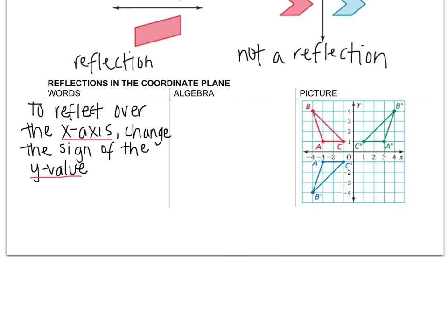So for example, if we start with this original, and we know it's the original because it doesn't have any of those prime markings, we went from A to A prime. The negative 3 is the same. This is (-3, 1). This is (-3, -1). It flipped over the x-axis and the y value changed.